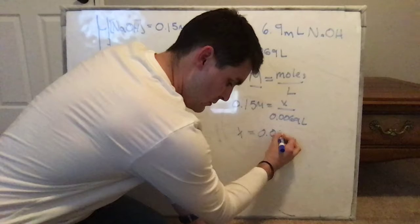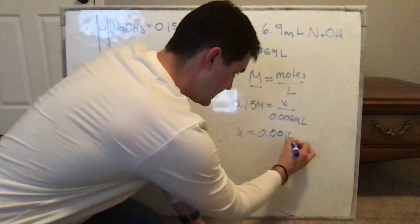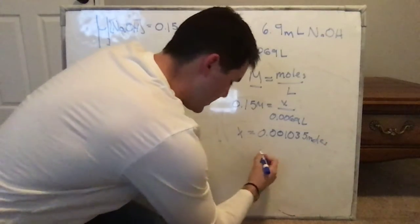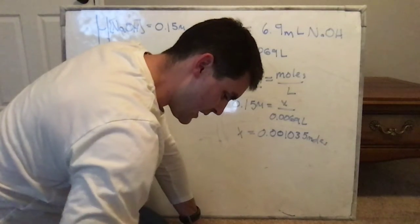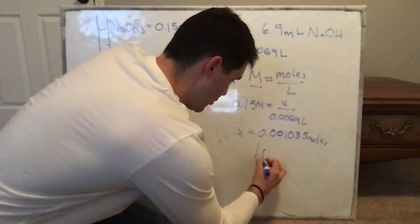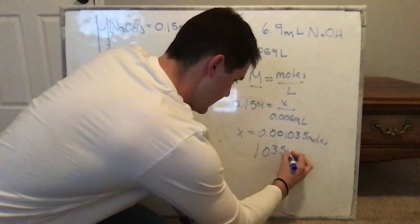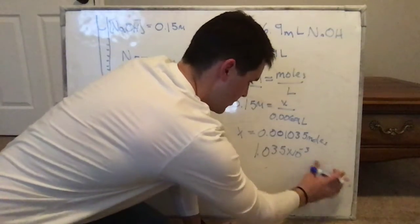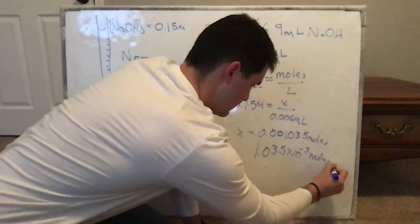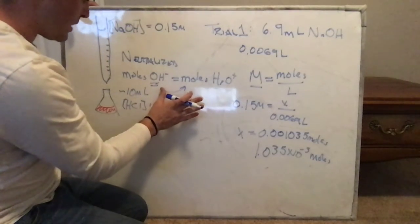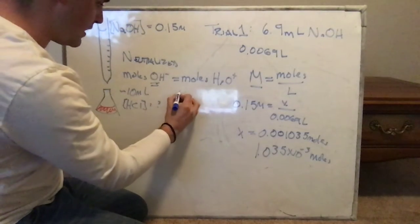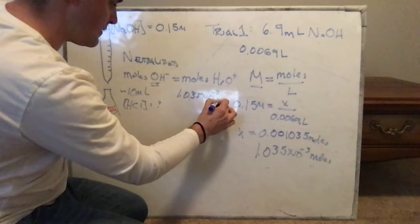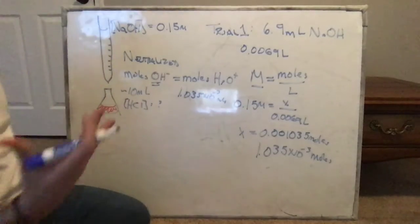It was 0.001035 moles. Or we can call that in scientific notation for those of us that prefer scientific notation, 1.035 times 10 to the negative three moles. So that's how many moles of H3O+ we had as well. I'm going to write that right here. 1.035 times 10 to the negative three moles. That's how many moles we had.